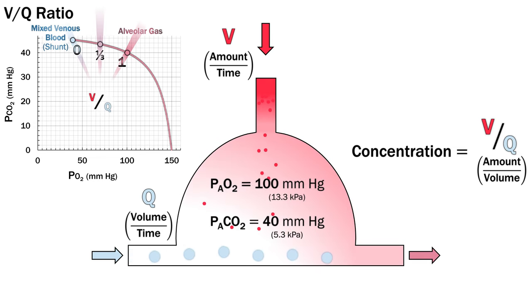We're now at the ideal midpoint, a VQ ratio of one, which gives our familiar alveolar gas composition. This is the steady state that we pictured in the alveolar ventilation section. A PO2 of 100 mm of mercury is equivalent to a hemoglobin saturation of 97 or 98%, which is certainly adequate for oxygen delivery.